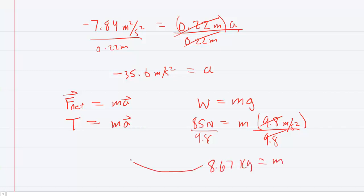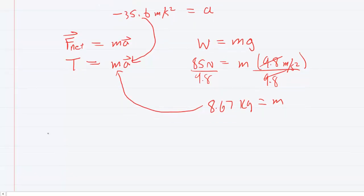So you'll fill that in for the mass. You'll fill the acceleration we obtained in for a, and this will help us solve for the tension. Here's the mass times the acceleration. When we multiply these together, we're going to get a tension in the fishing line of about negative 309 newtons.